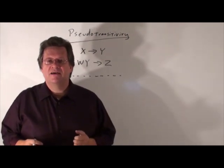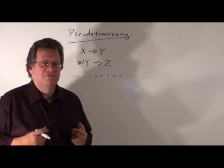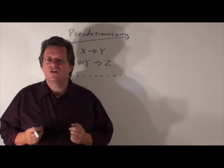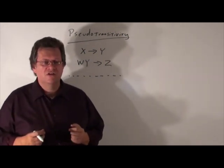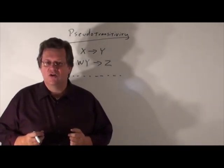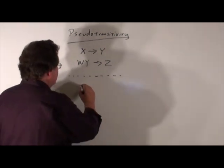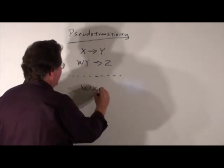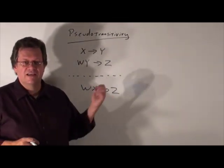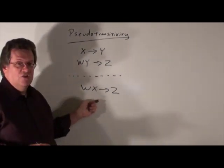The next inference rule I want to talk about is pseudotransitivity. What exactly is pseudotransitivity? If you look behind me, I've got two functional dependencies. Let's assume X function determines Y is in F closure, and also WY function determines Z is in F closure. What we're doing is substituting a Y with an X in this case, so we would have WX functionally determining Z. This is our definition of pseudotransitivity.